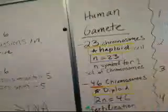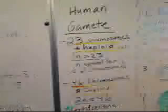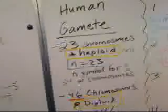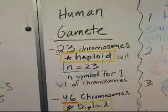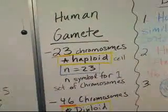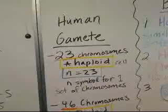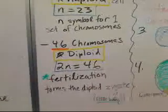Human gamete, 23 chromosomes, that would equal a haploid cell. And just like in algebra, n equals 23. Well, n is a variable, and it's a symbol for one set of chromosomes. There's 46 chromosomes in a diploid. 2n equals 46. Fertilization forms the diploid zygote.